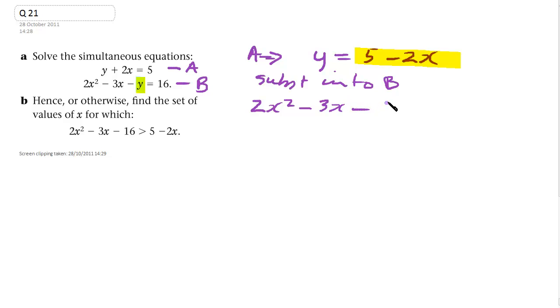And we get 2x squared minus 3x minus, let's put brackets around all this to make sure we don't make any mistakes with the signs. Always do that. So the yellow bit always goes in brackets. Equals 16, and then you're less likely to make sign errors.